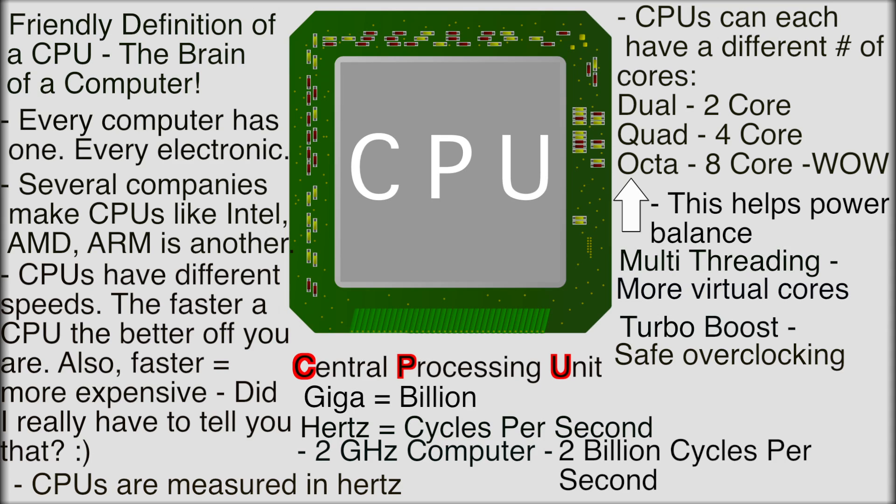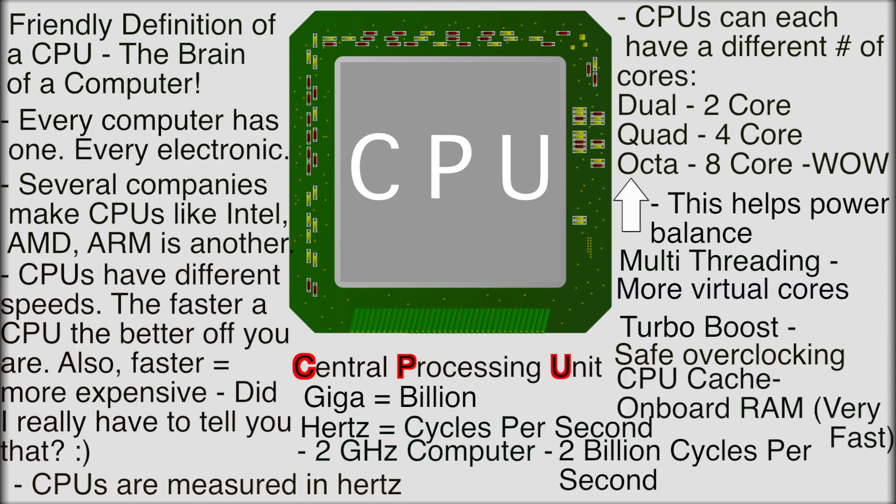There's also cache on a CPU, which is like really fast RAM — data that's accessed the most is stored right on the CPU. I'll talk about what RAM is in another video. That's pretty much it for today's episode. If you guys like it, leave a thumbs up, and stay tuned for more if you want to know more about computers. See you later.